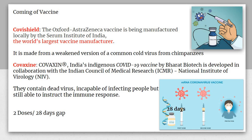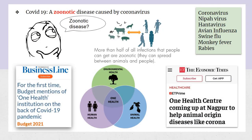Covishield is made from a weakened version of a common cold virus from a chimpanzee. Covaxin is India's indigenous COVID-19 vaccine by Bharat Biotech, developed in collaboration with the Indian Council of Medical Research (ICMR) and the National Institute of Virology, headquartered in Pune. Covaxin contains dead virus — incapable of infecting people but still able to instruct an immune response. Two doses are required, with a gap of 28 days between them.